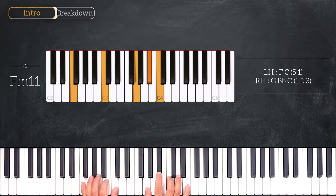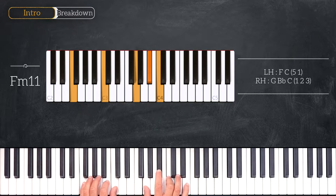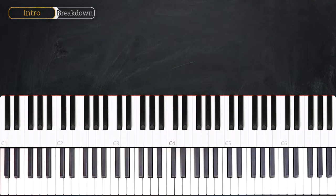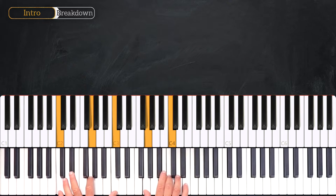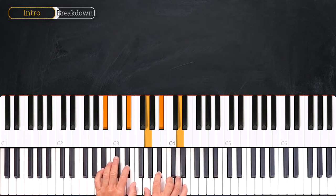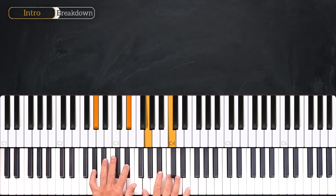We're playing root note, fifth, ninth, ninth, 11th, and fifth. So let's go over all the chords again: we start on this C chord, then we'll play E-flat major 7 into A-flat major 7, and we'll finish playing F minor 11.